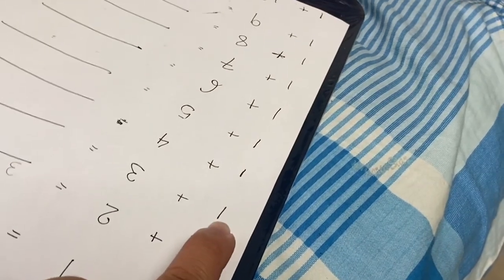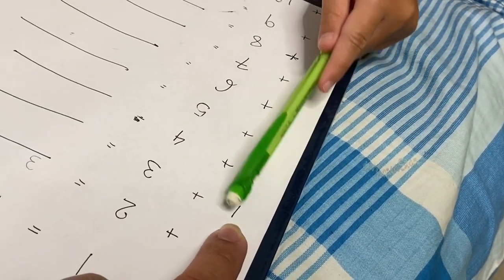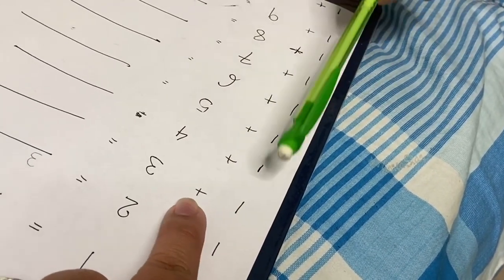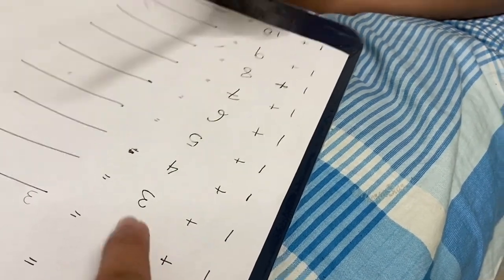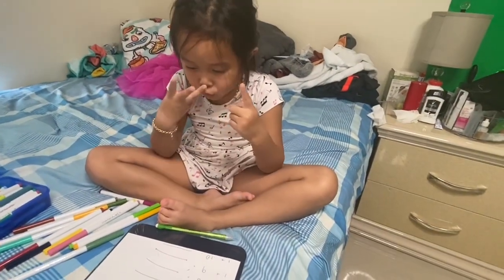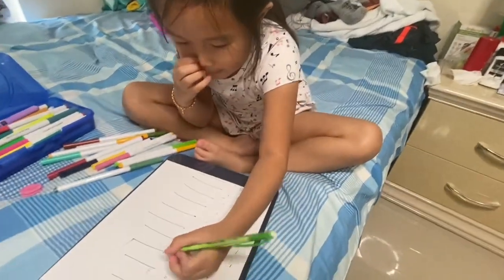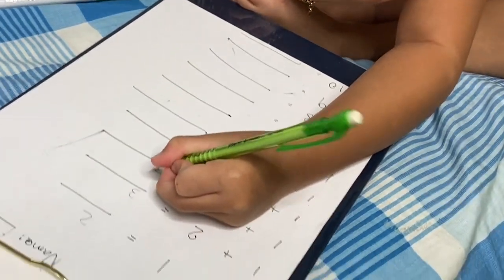Alright, next problem. Point your finger. One plus three equals. Okay, one plus three. How do we do it? One, two, three, four. Four. Good job. Is that the correct number? Good.